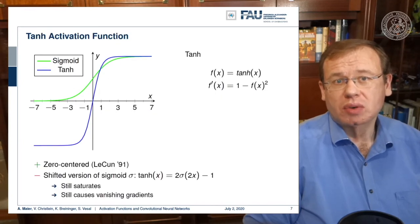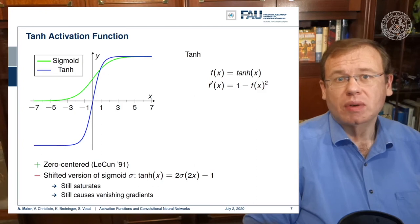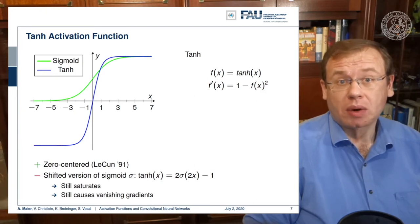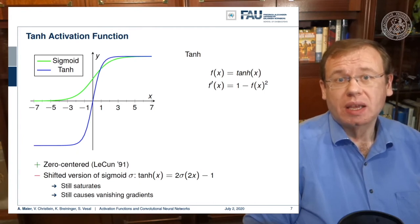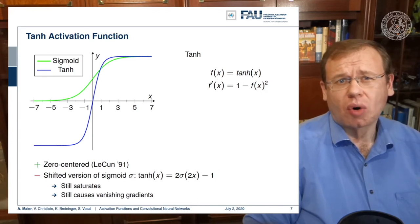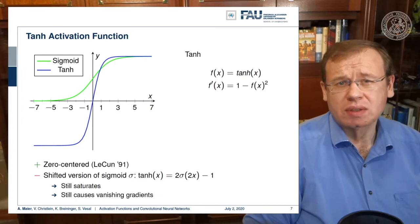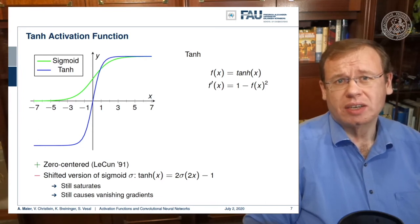We can work with other activation functions. A very popular one is the hyperbolic tangent, shown here in blue. It has very nice properties. For example, it's zero-centered and has already been used by LeCun since 1991. You could say it's a shifted version of the sigmoid function. But one problem remains: the saturation. Maybe at 2 or minus 2, you already see that the derivatives are very close to zero. So it still causes the vanishing gradient problem.